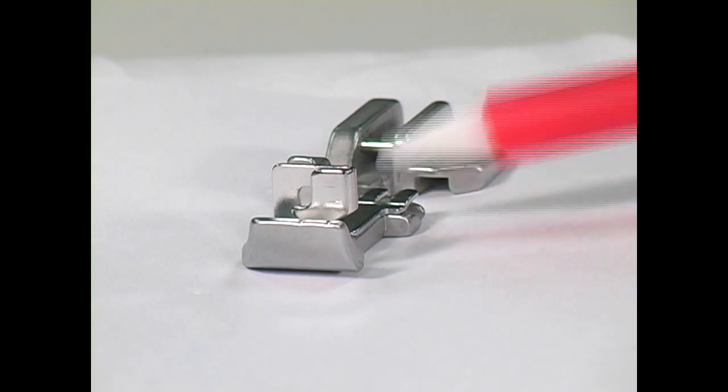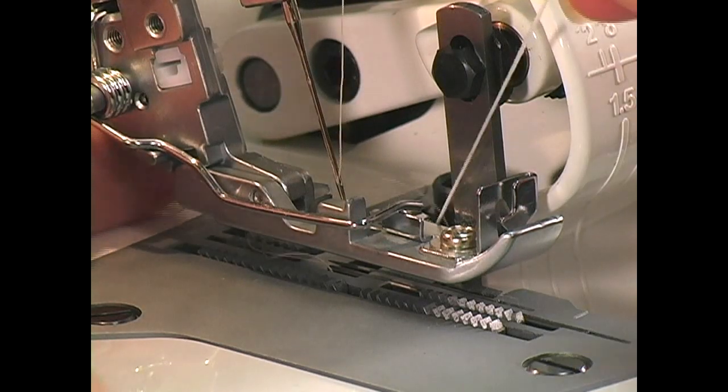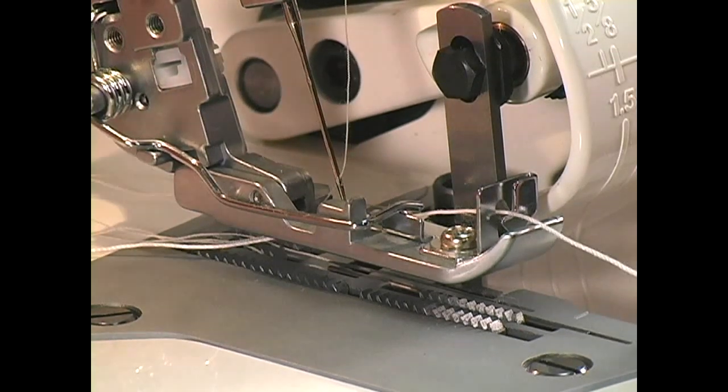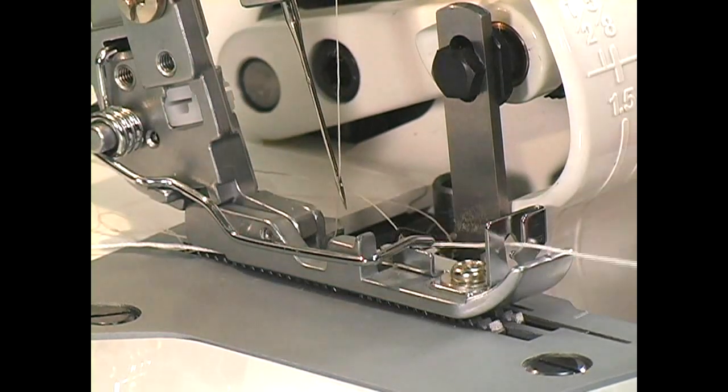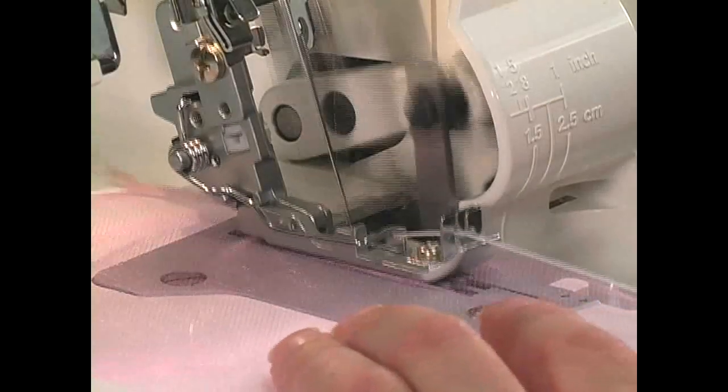Together, the guides lead the cord directly into the stitching holding it in place as the rolled hem stitch forms around it. Place the cord in the U-shaped guide, then into the guide in the front of the foot. Lower the foot, take a few stitches holding the end of the cord at the back of the foot. Slide the fabric under the foot and continue to stitch.